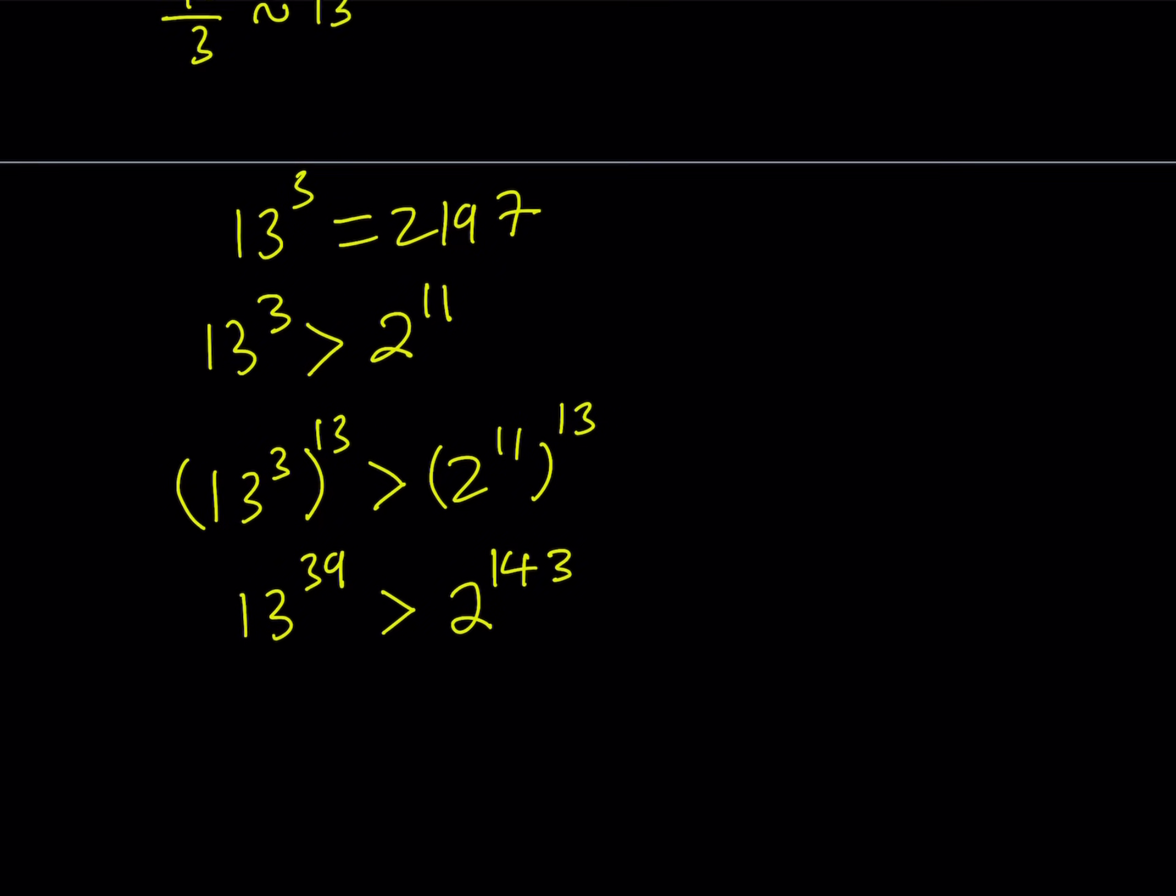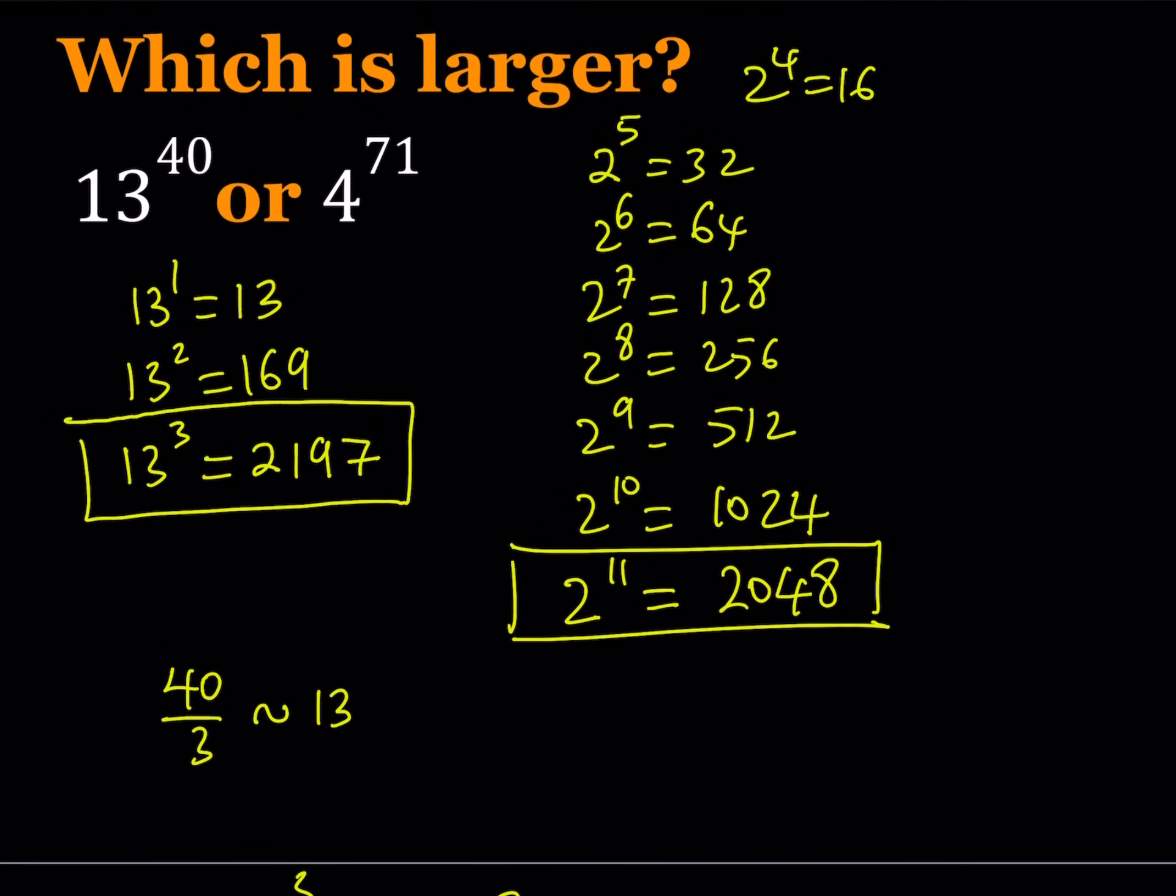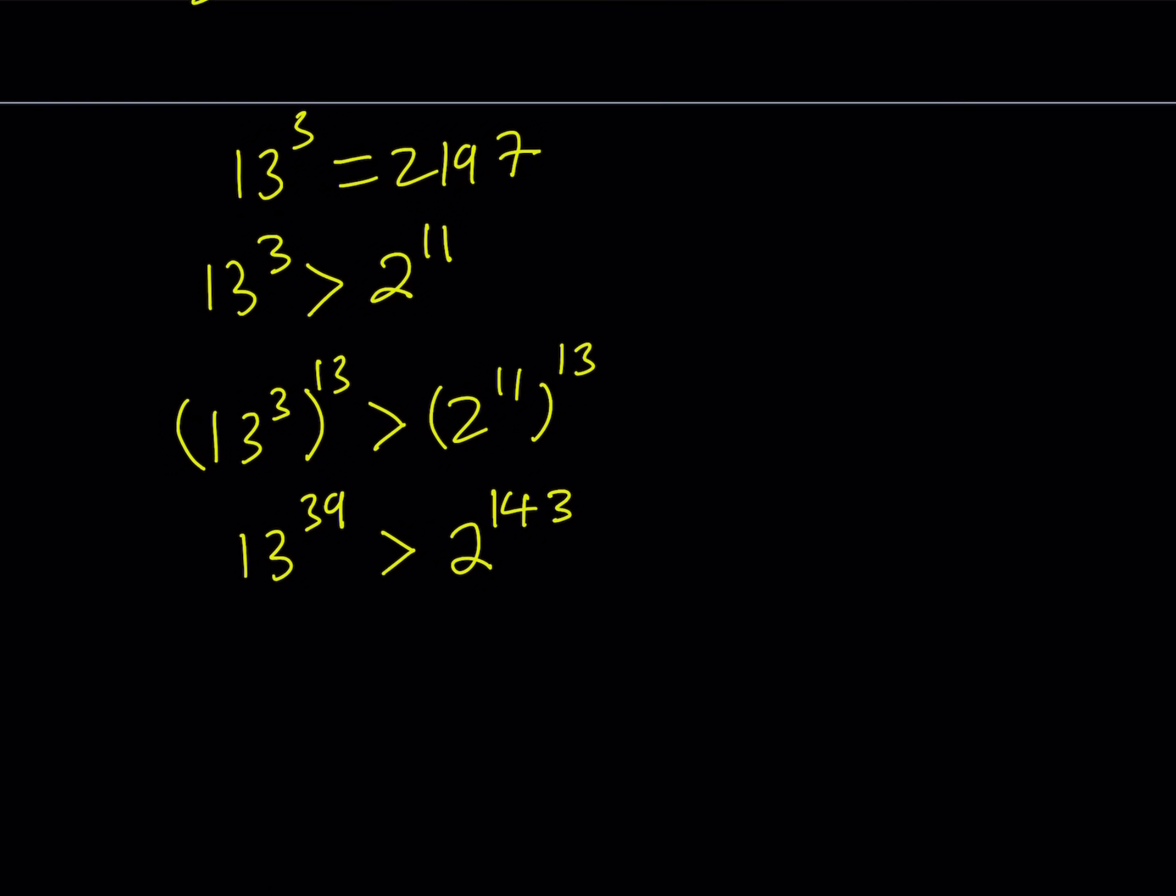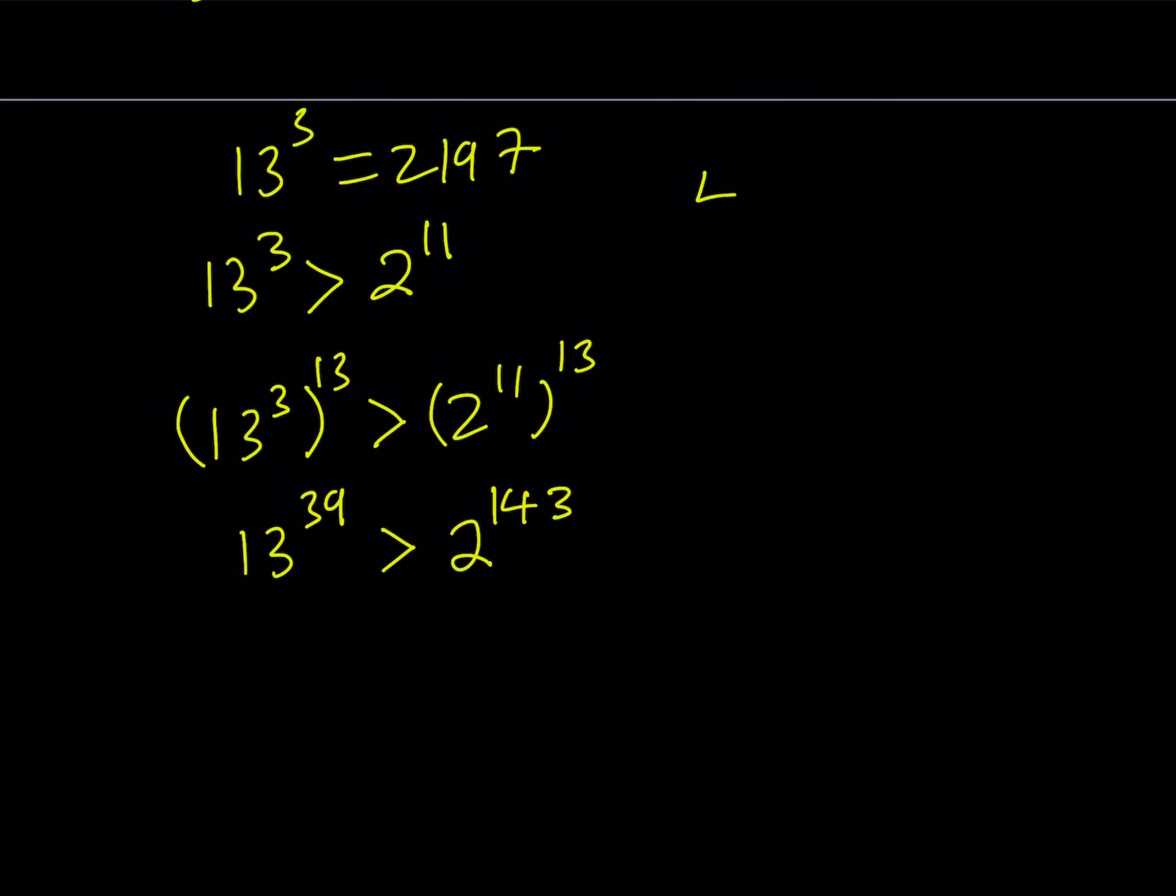Now I got to think about the original problem at this point because I want to get as close as possible. So we're supposed to compare these two numbers. I have 4 to the power 71, but I used powers of 2. So let's convert it to a power of 2. Since 4 is 2 squared, I can write it as 2 to the second power to the power 71, and that is going to give me 2 to the power 142. Awesome. So we're pretty close.